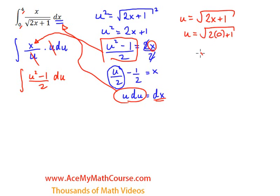2 times 0 is 0 plus 1, which is 1, and the square root of 1 is 1. So the lower limit is 1. What about the upper limit, the 4? Well, u equals the square root of 2 times 4 plus 1, so we just plug it in: 2 times 4 is 8 plus 1...